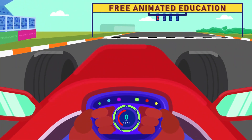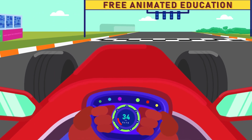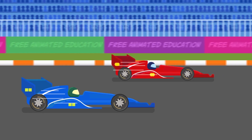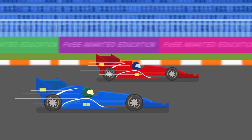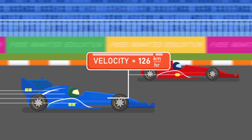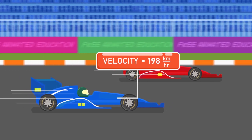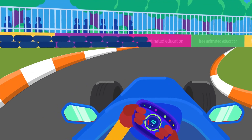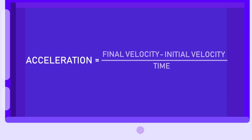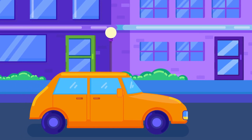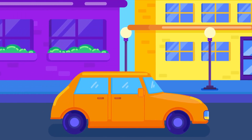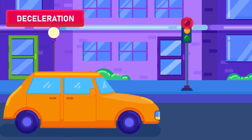What actually happens is, when he sees the red lights turned off, the driver will push on his accelerator. His car will gradually move faster until it reaches a certain velocity. A body is said to be in acceleration if its velocity is changing. As velocity is a vector quantity, the change can be in the magnitude or in the direction of the movement. Thus, acceleration is the rate of change of velocity. If the velocity is increasing, we call it acceleration. When the velocity is decreasing, we call it deceleration or retardation.